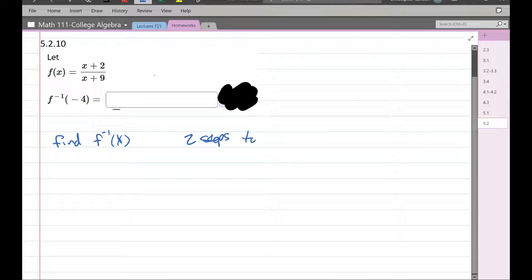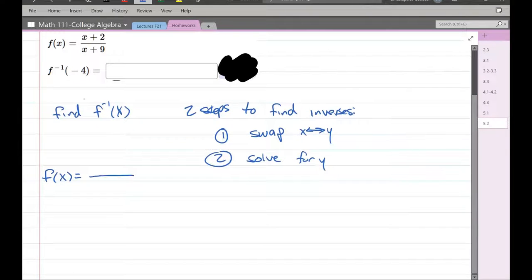To find inverses, step one is swap x and y. And step two is solve for y. All right. So I'm going to rewrite our original function, f of x equals x plus 2 over x plus 9.